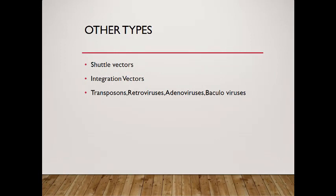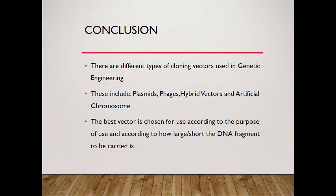Other types of integrating vectors include transposons, retroviruses, adenoviruses, and lentiviruses. There are different types of integrating vector systems. In eukaryotes, they include plasmid, phagemid, hybrid vectors, adenoviruses, and transposomes. The best vector to use depends on the purpose of use and according to how large an insert can be carried.